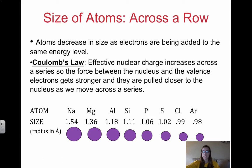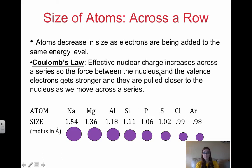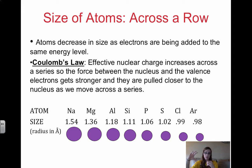Atoms decrease in size as electrons are being added to the same energy level. As we go from left to right we're staying in the same energy level, but we're adding protons, so effective nuclear charge is increasing. Because effective nuclear charge is increasing, the electron cloud is being pulled closer to the nucleus, resulting in a smaller atomic radius. The positive force from the nucleus is increasing, so the electrons are pulled in closer.